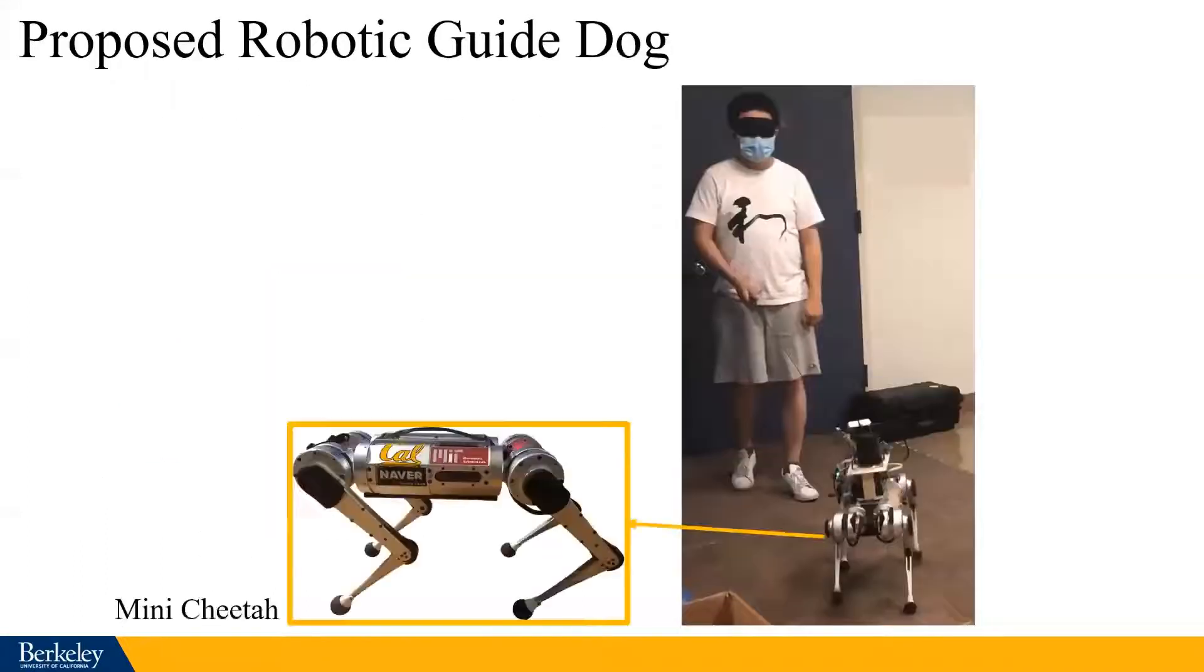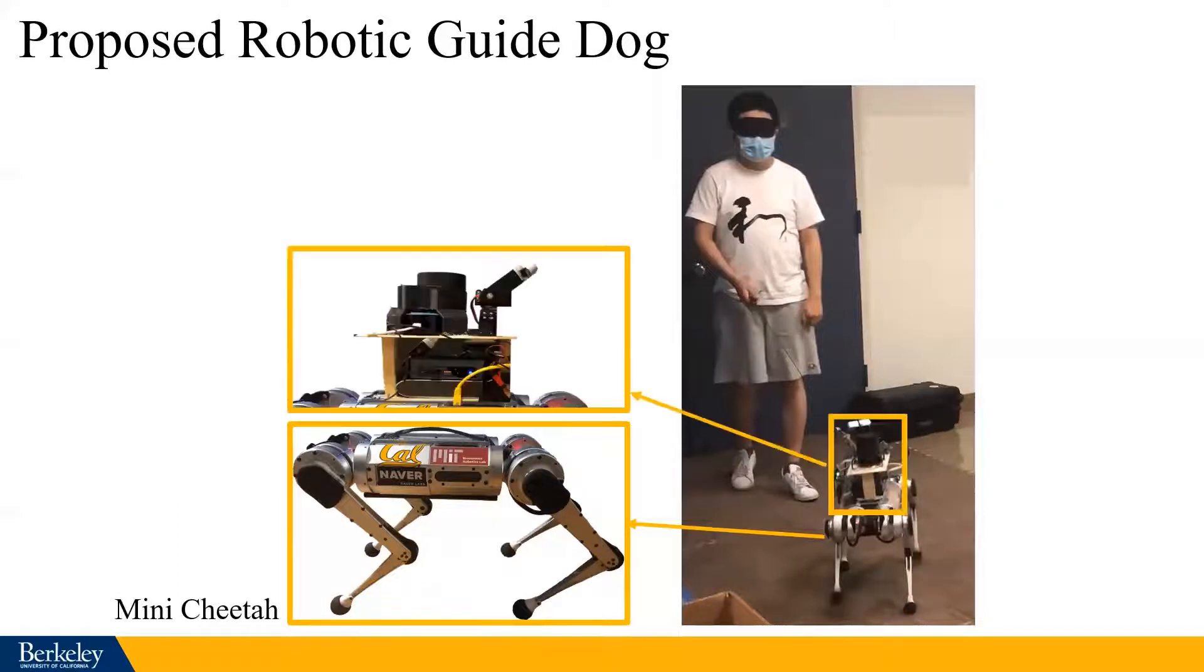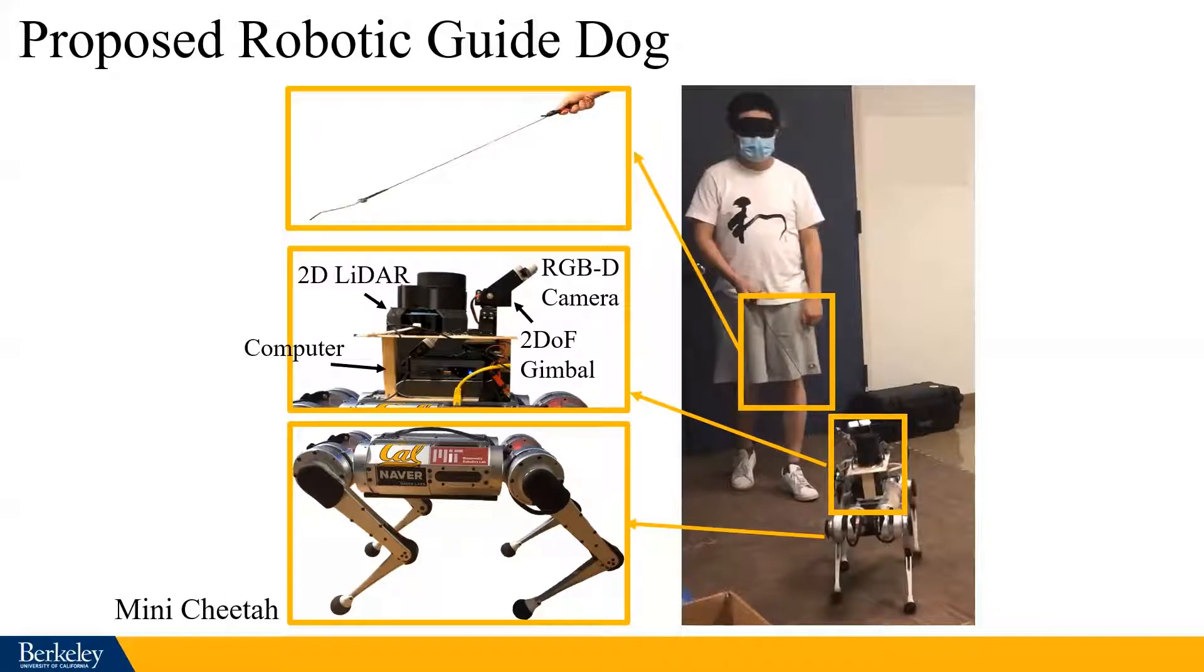Here is our system. We use a quadrupedal robot that is a mini-cheetah. This dynamic robot is able to perform agile maneuvers with small footprints. Moreover, it is morphologically similar to a puppy, and thus makes it more welcome in the human community. We build a sensor kit on top of it. It has a RGB-D camera to detect the human being led, a 2D gimbal to follow the human by rotation and pitching. We also have a 2D lidar to do mapping, localization, and to detect obstacles. There is also an on-board computer to process the real-time data. In this system, we are introducing a leash to lead the human, and the leash can be either slack or taut. We have a force sensor at the end of the leash to measure the interactive force.